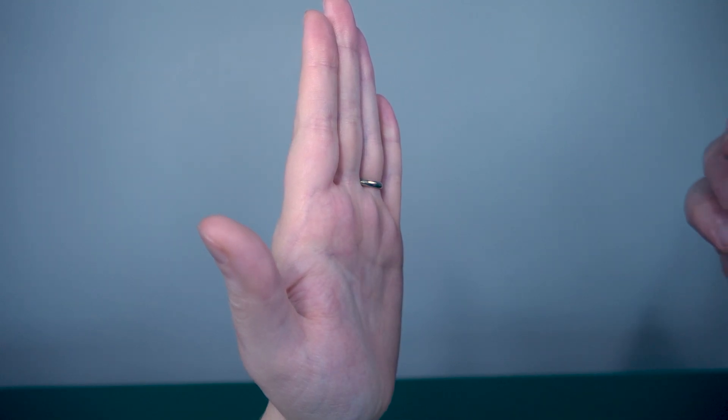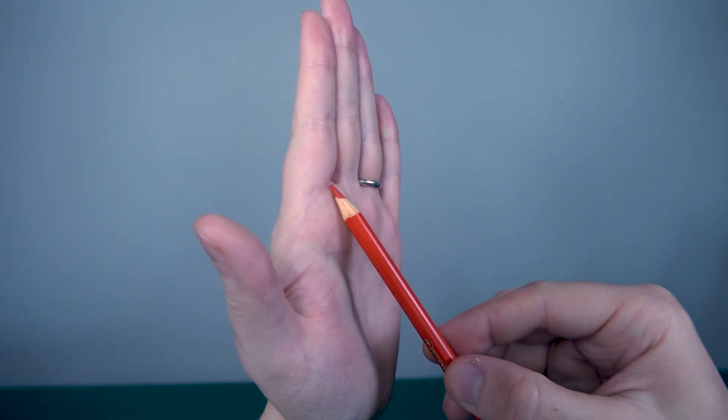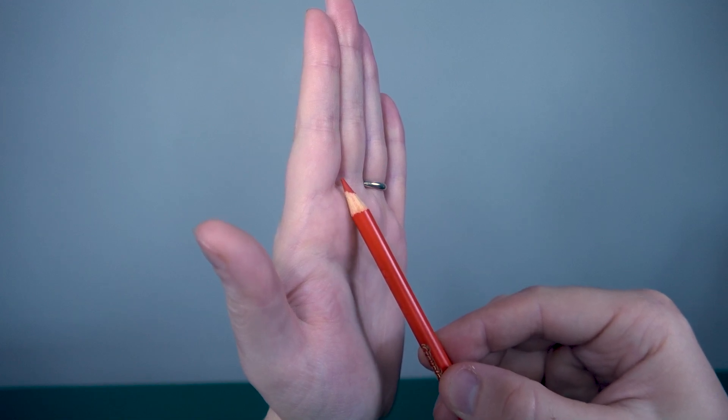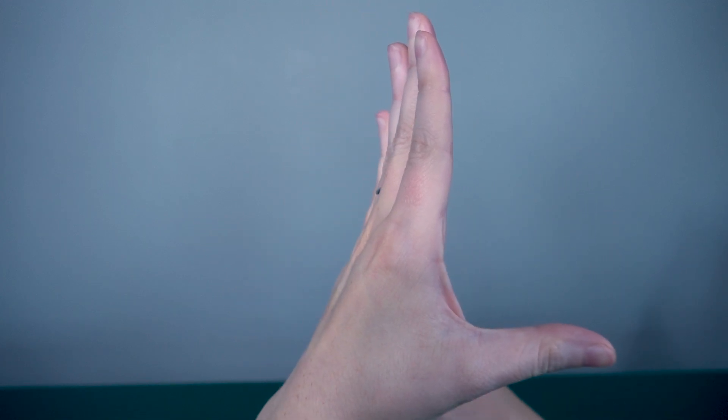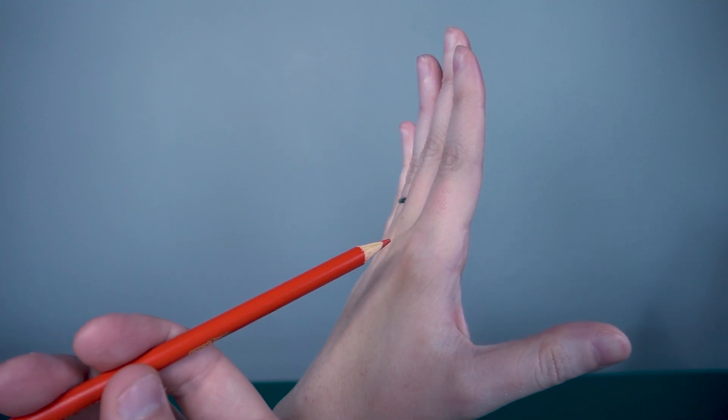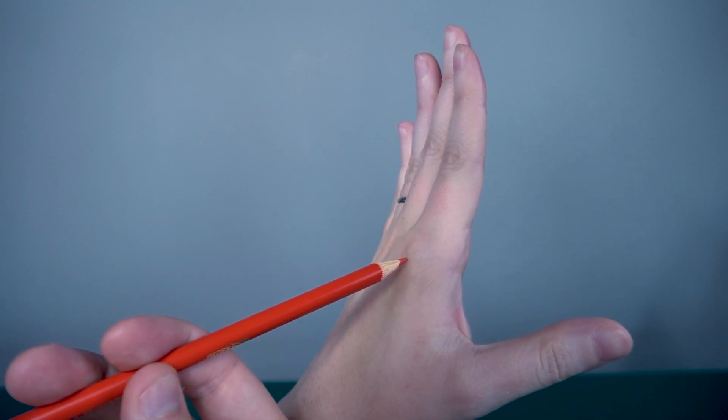they want to put the axis right here on this crease because they think that's the MCP joint. But if you turn the hand, you'll see that the MCP joint is actually right here.